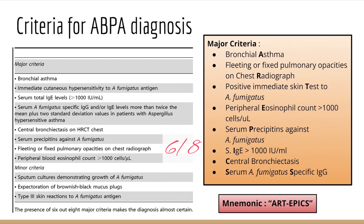Minor criteria include: sputum cultures demonstrating growth of Aspergillus fumigatus, expectoration of brownish-black mucus plugs, and Type 3 skin reactions to the Aspergillus fumigatus antigen. These criteria will be given as clinical clues in questions or as options, so remembering them is important.